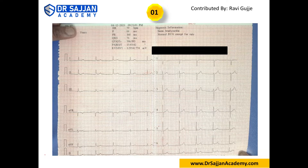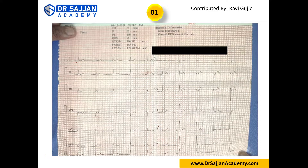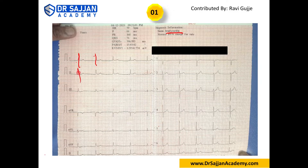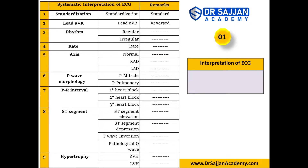Left ventricular hypertrophy is also not present. Coming to bundle branch block — there is no wide QRS complex, so bundle branch block is ruled out. This is essentially a normal rhythm — normal sinus rhythm. There could be some junctional irregularities, but looking at the ECG, the only finding here is possible borderline bradycardia. Calculating exactly: one, two, three, four, five — exactly 60 beats per minute. Bradycardia is below 60, so this could be borderline bradycardia.